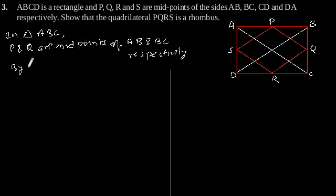So by midpoint theorem, we can say that PQ is parallel to AC and PQ is equal to 1/2 AC. Let's say this is our equation 1.